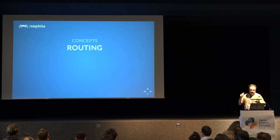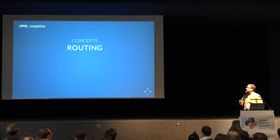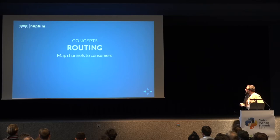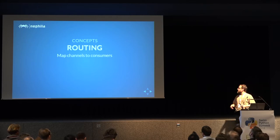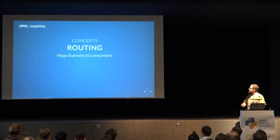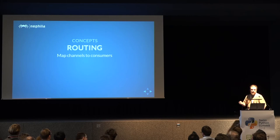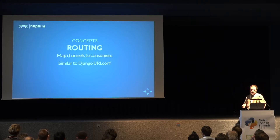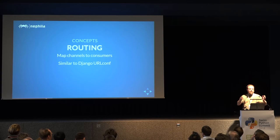Then you have routing, because when things come in, you want different consumers or functions to be called on those messages. The routing is a way to tell channels how to route messages to different consumers according to some properties called filters. In a way, it's similar to Django URL Conf — you put the URL, some parameters, et cetera.